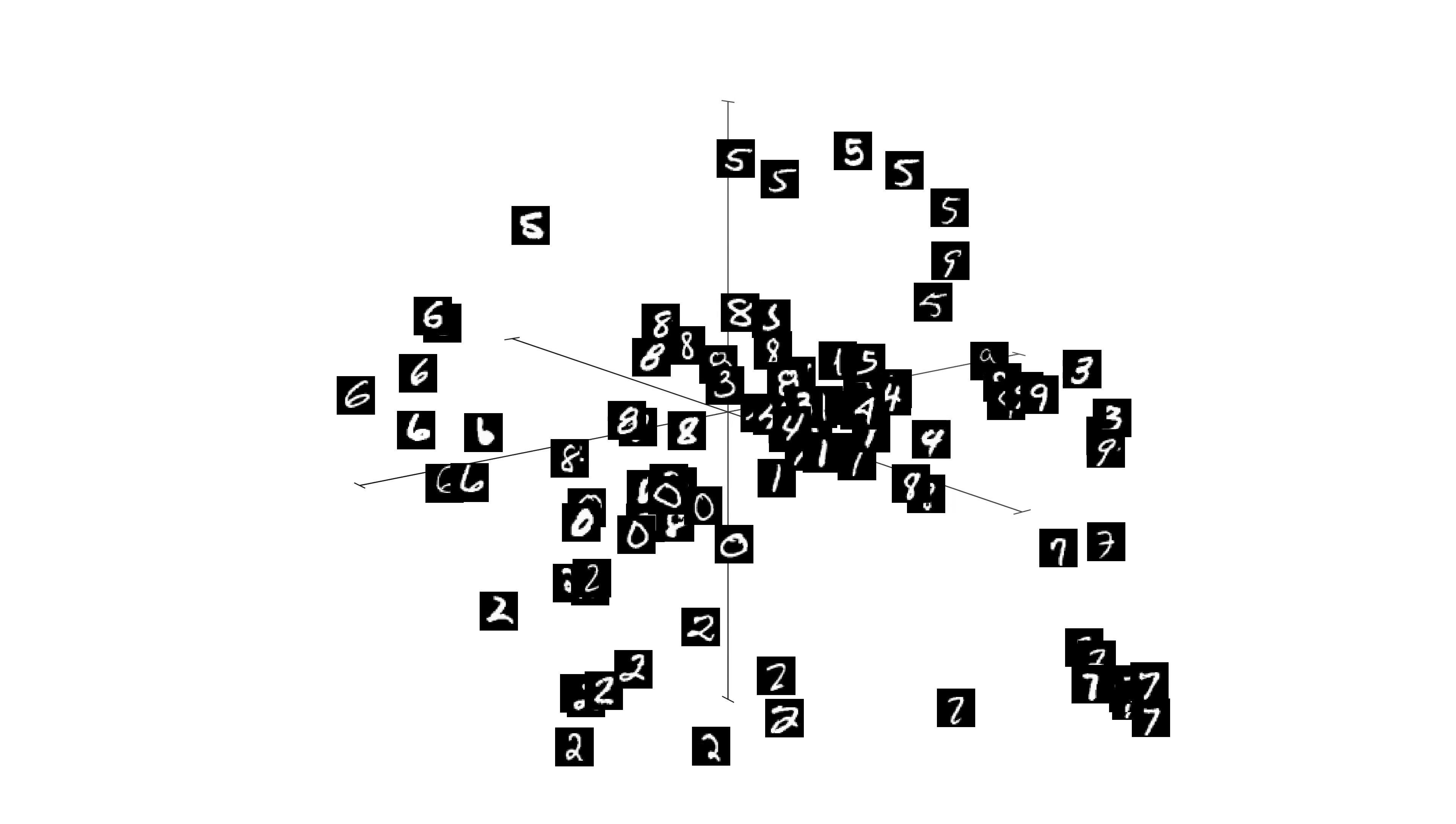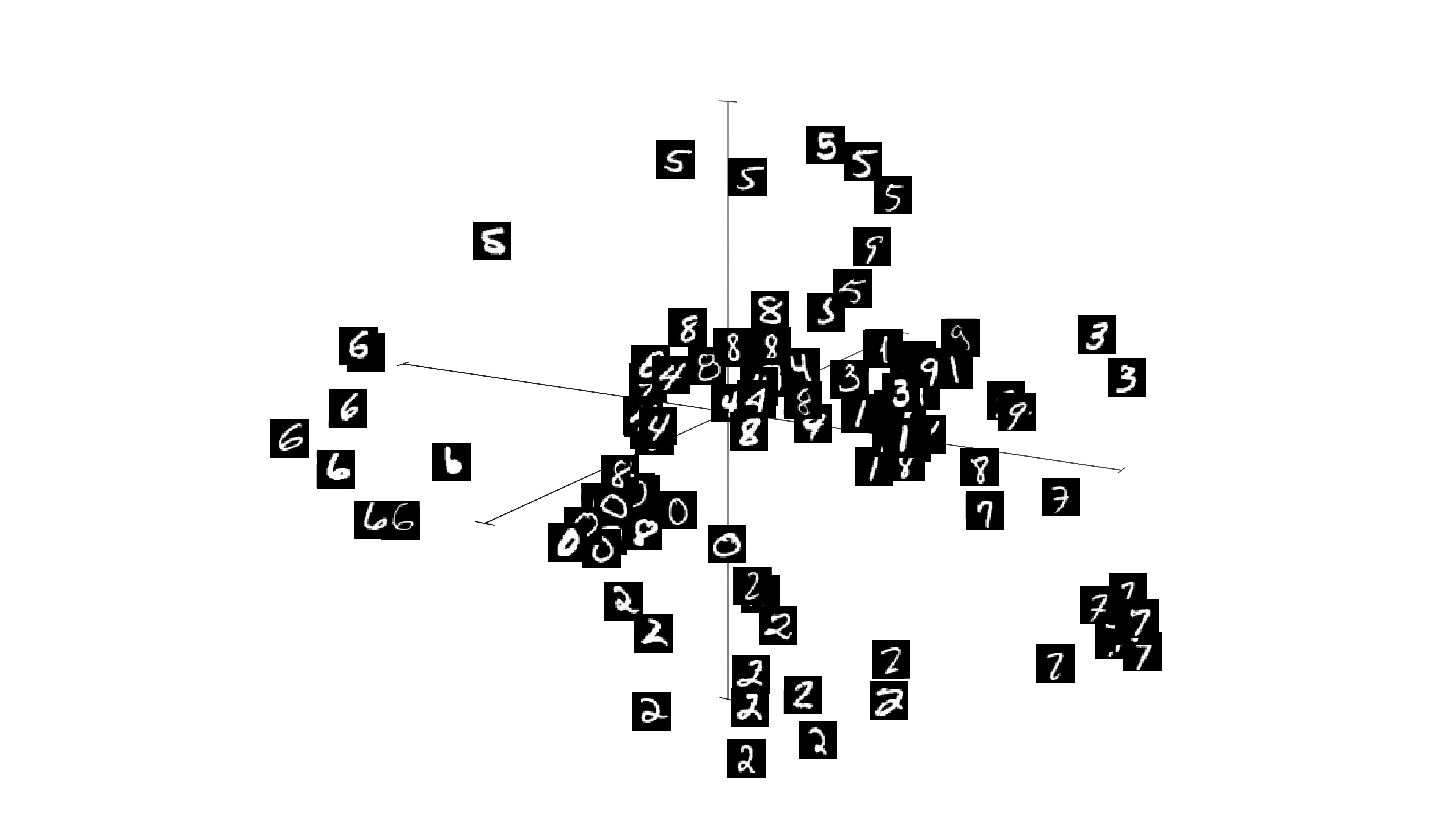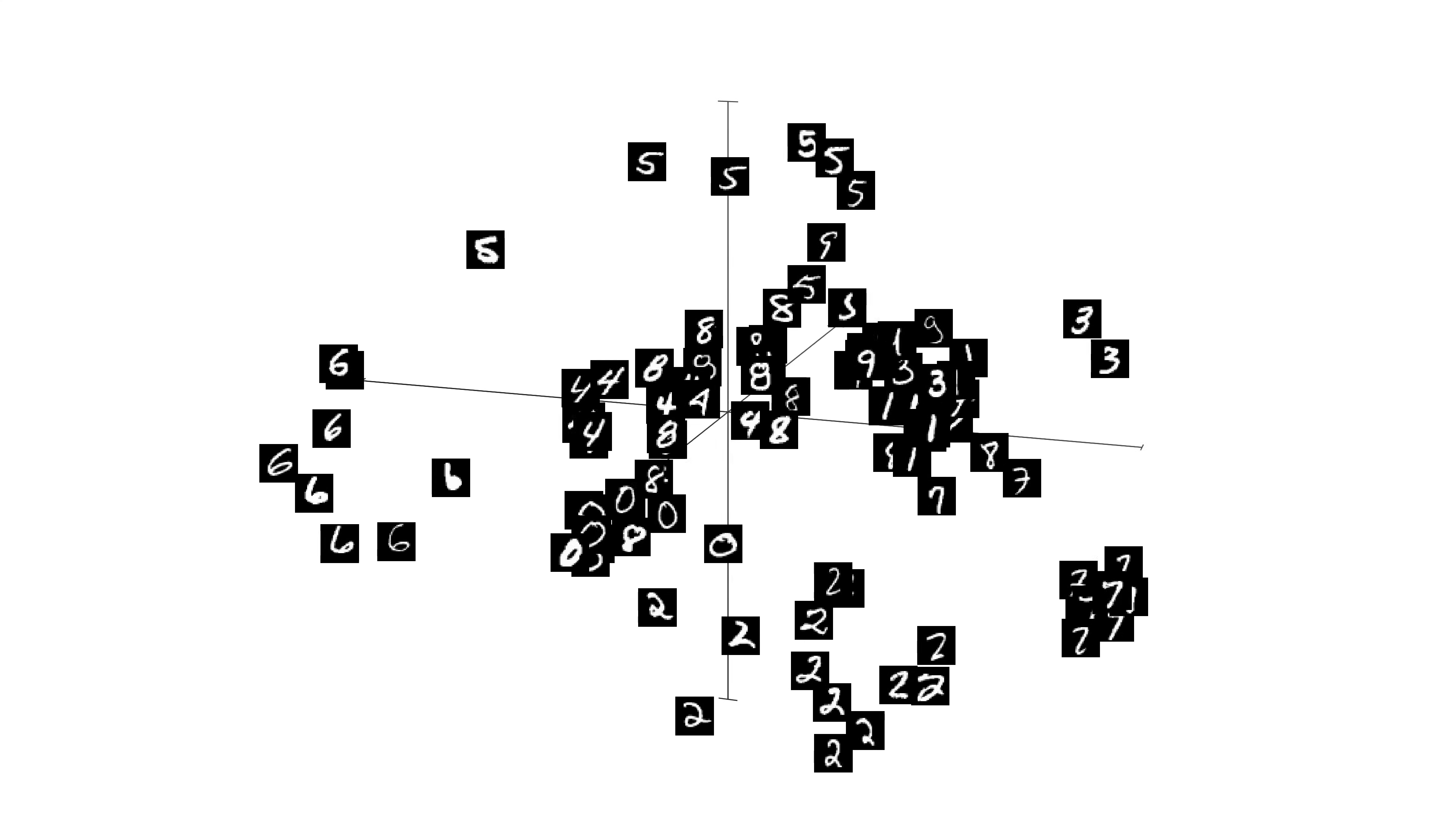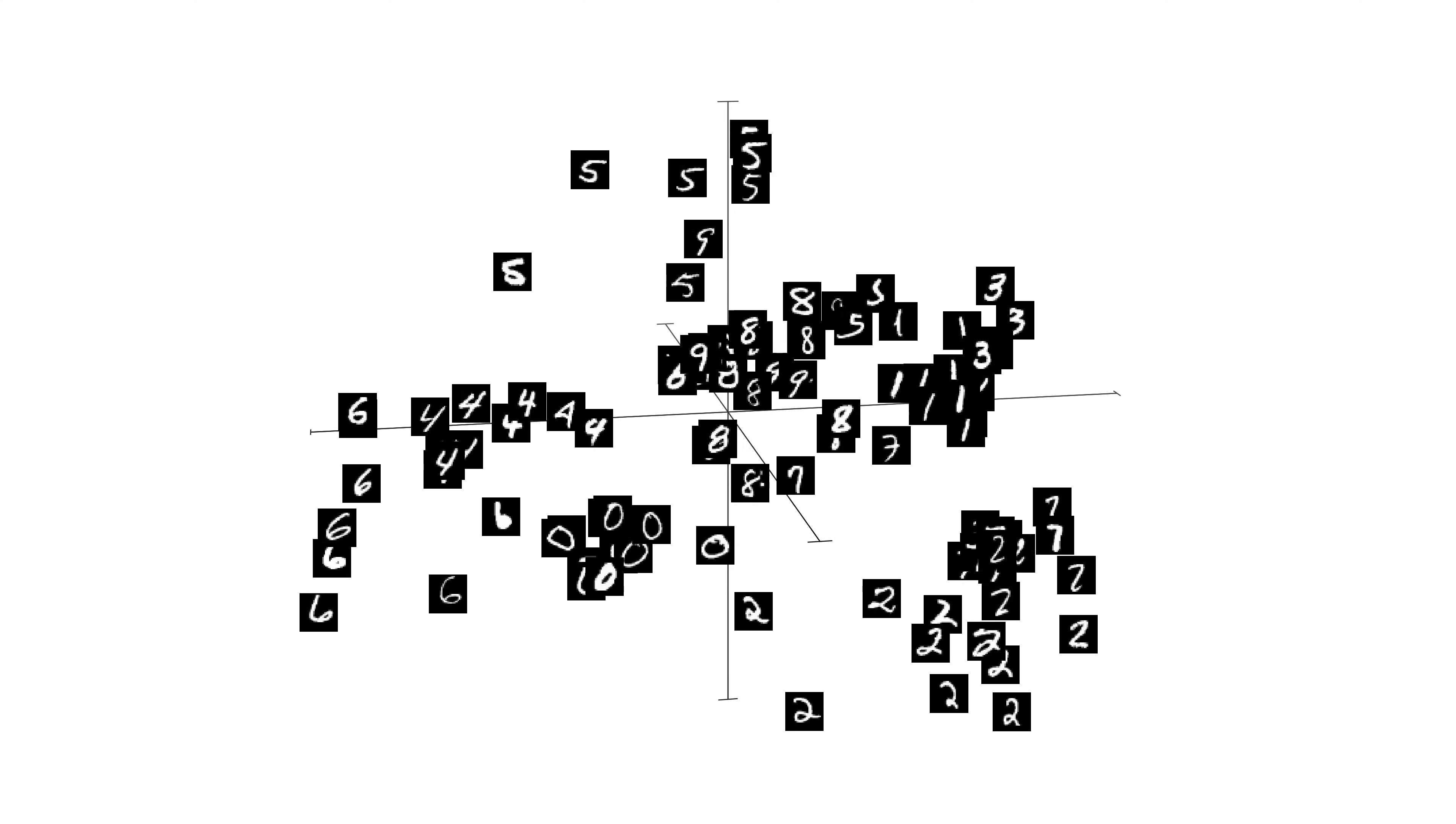As you can see, by the final layers, the network already found a way to morph the space in such way as to position the digits into their own clusters. Here we also see that digits that are similar are placed closer to one another, which makes sense.